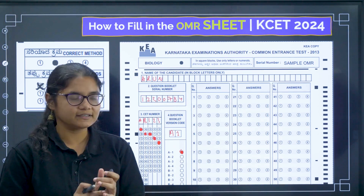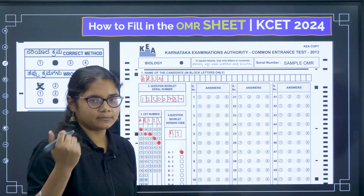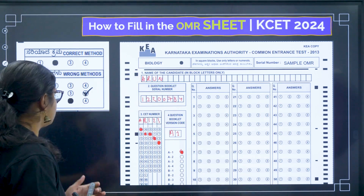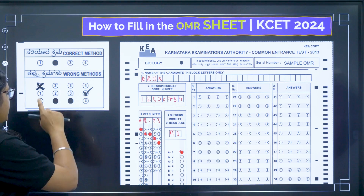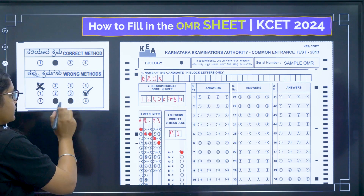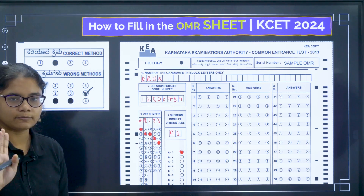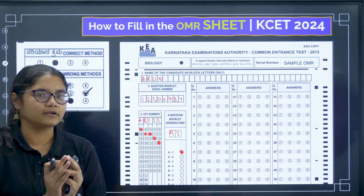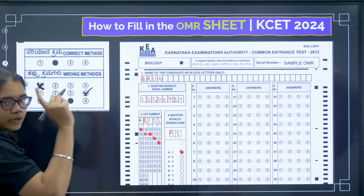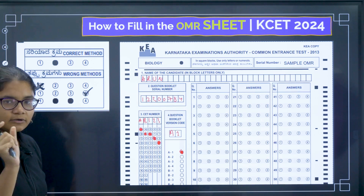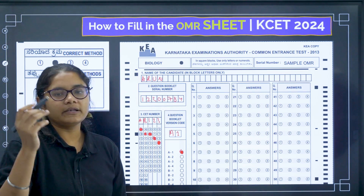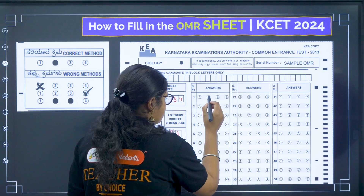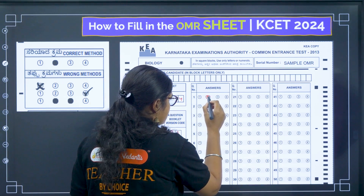Once you have answered the questions, bubble the answers on the OMR sheet. For example, if question 1's answer is option 3 or C, go to that question and bubble it. Important rules: do not tick the answer — only bubble it. Do not bubble two options for the same question, as that question will not be evaluated even if the correct answer is there. Also, the circle should not go outside the bubble boundary — fill it carefully within the circle.